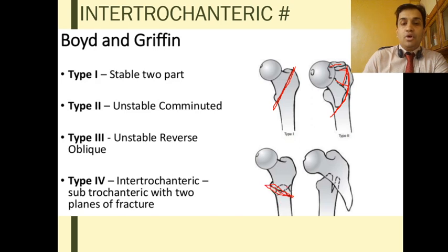Type 3 is a reverse oblique fracture. A reverse oblique is so called because in all other variants of intertrochanteric fracture the fracture line progresses from superolateral to inferomedial.